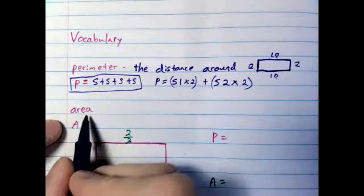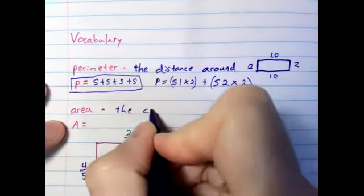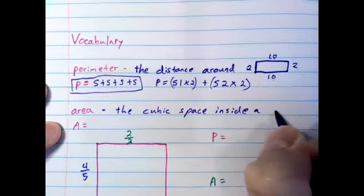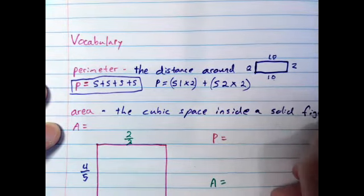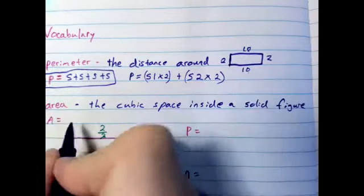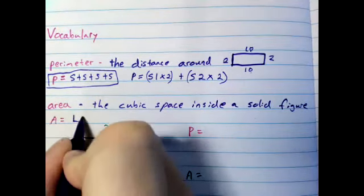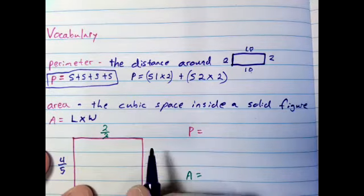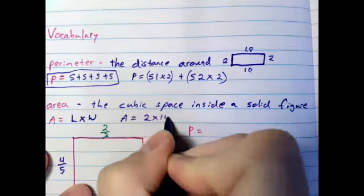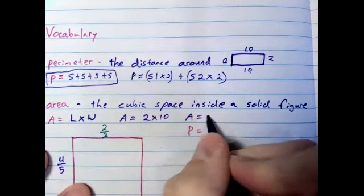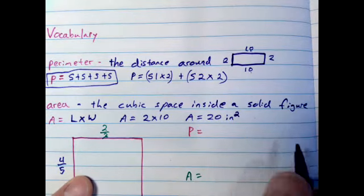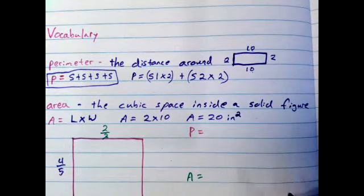Let's take a look. Another vocab term here, area: the cubic space inside a solid figure. Most of the time we're talking about a face of a figure. The formula for area will be area equals length times width. So for our example here, it is 2 times 10. So area equals 2 times 10, which means area equals 20. For this example, let's call it 20 inches squared, because that stands for cubic inches.